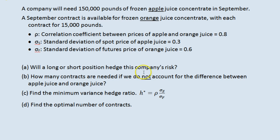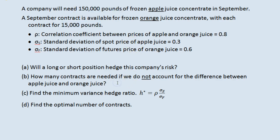In question B, how many contracts are needed if we do not account for the difference between apple juice and orange juice? So if we were to pretend these two were the same thing, each contract is for 15,000 pounds and the company needs 150,000 pounds, so the answer here is just 10.